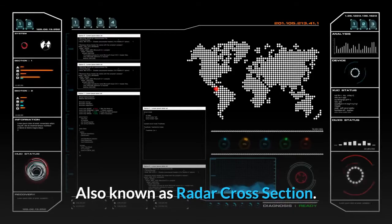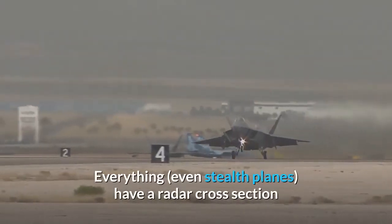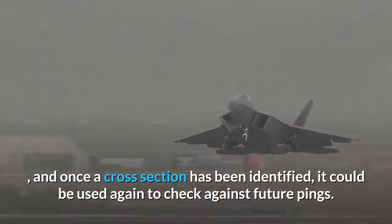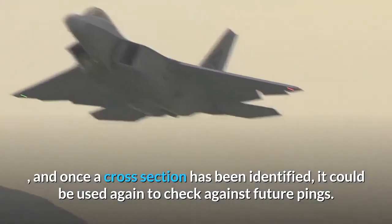Also known as radar cross-section. Everything, even stealth planes, have a radar cross-section, and once a cross-section has been identified, it could be used again to check against future pings.